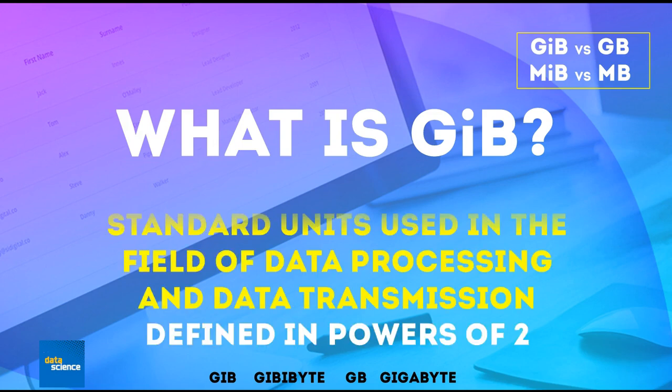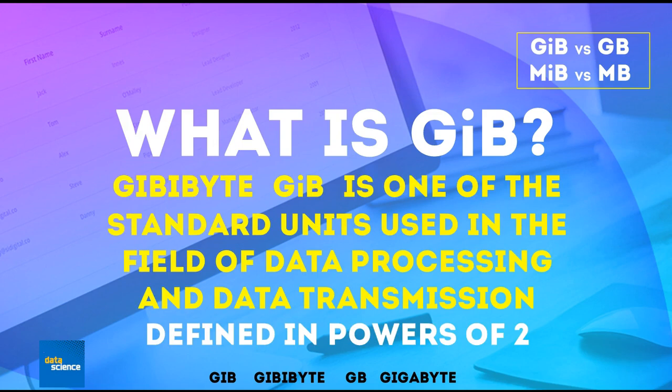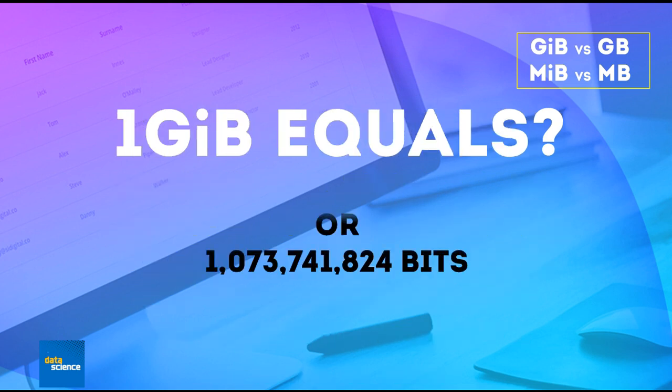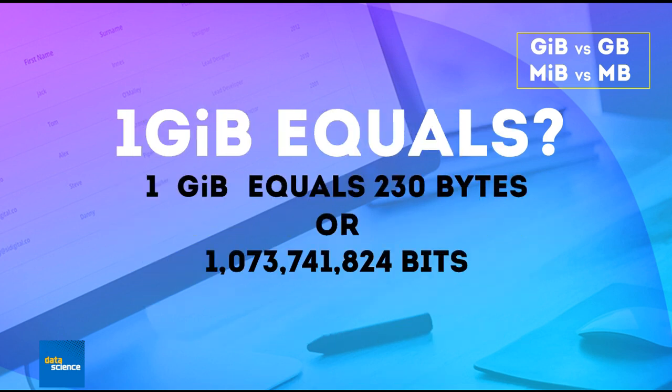What is a gibibyte? A gibibyte is one of the standard units used in the field of data processing and data transmission. It's defined in powers of 2: 1 gibibyte equals 2 to the power of 30 bytes, or 1,073,741,824 bytes.